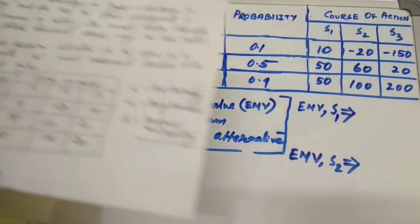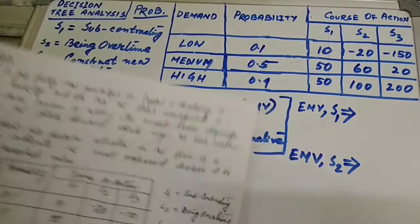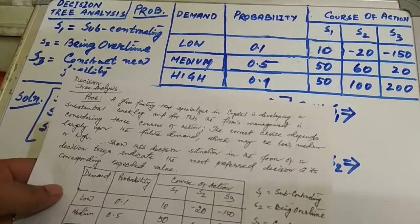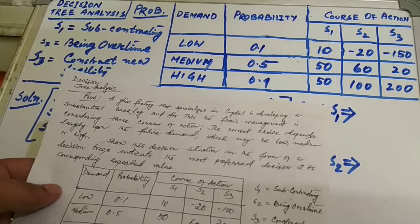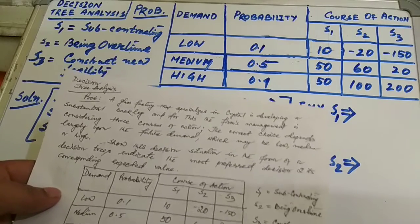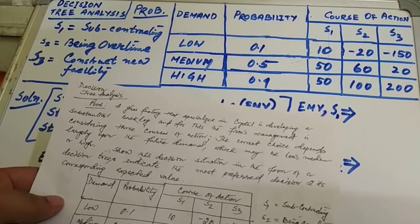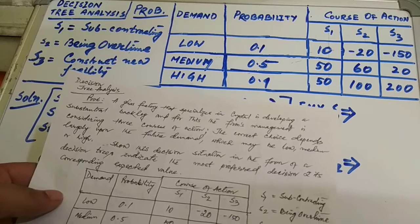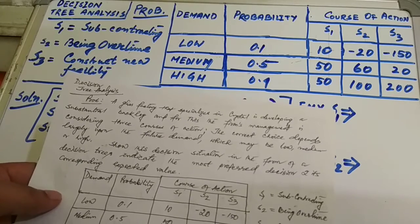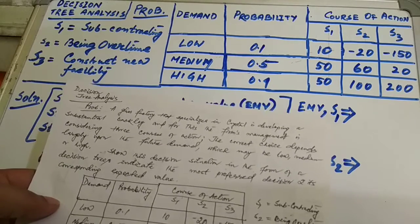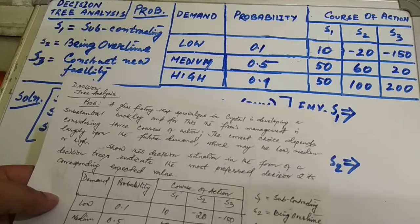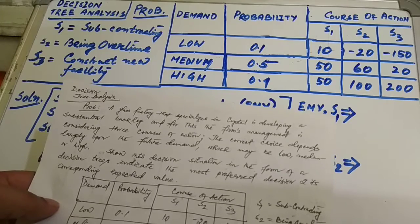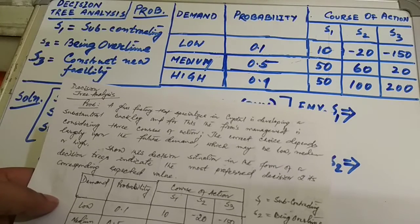Our next topic is decision tree analysis. In this decision tree analysis, we have to find the expected monetary value, then we have to draw the diagram — that is the decision tree. Next, we have to select the best alternative.